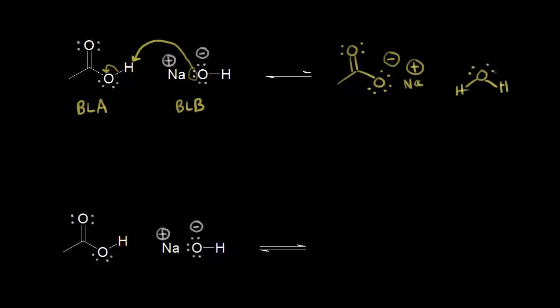Let's follow our electrons along. The two electrons — this lone pair right here on the hydroxide anion — picked up this proton. So let's say those two electrons in magenta are these two electrons, and this was the proton that they picked up.